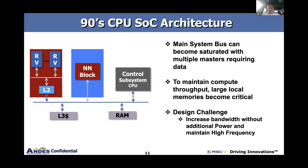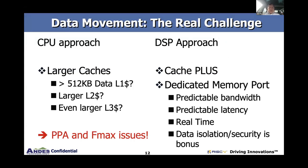How do we increase bandwidth without increasing additional power while maintaining high frequency? The simple way is to make the bus wider and wider to increase bandwidth. Neural network blocks or vector extensions — 512-bit is common, and people are talking about 1000 bits for neural networks. To feed that I could have a 1000-bit bus, but that's a lot of overhead.